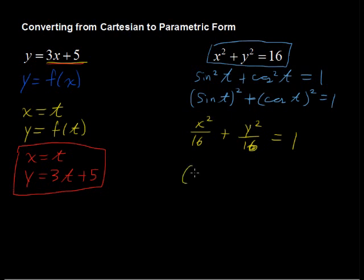So let's rewrite that as x over 4 quantity squared and y over 4 quantity squared equals 1. Now this really does match the sine of t and cosine of t in each of those squared.